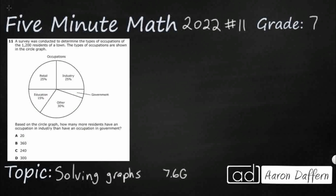So we have a survey conducted of the different types of occupations of 1,200 residents. We've got all these different percentages here: industry, retail, education, other, and government. Government looks like the smallest slice. So based on the circle graph, how many more residents have an occupation in industry than government? We're going to need to subtract because we're comparing. You notice that they don't give us a percent for government, and our answers are not in percents — we've got to turn these into numbers.